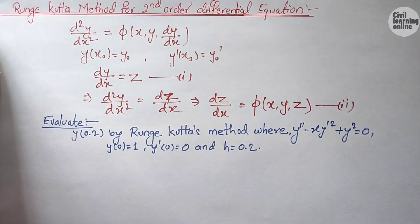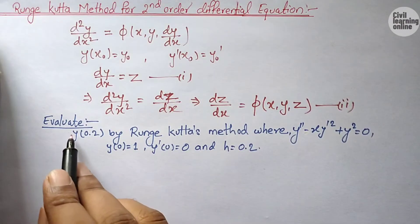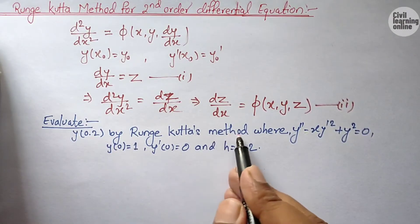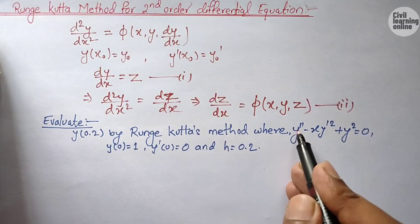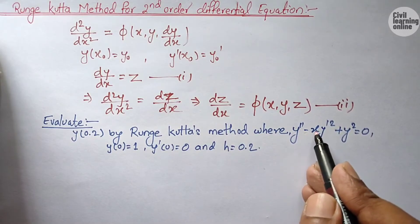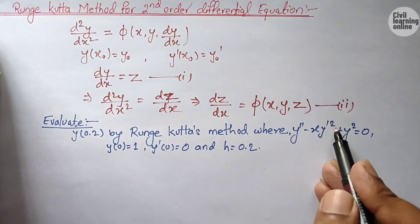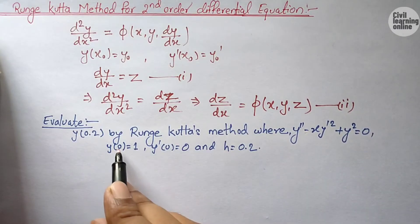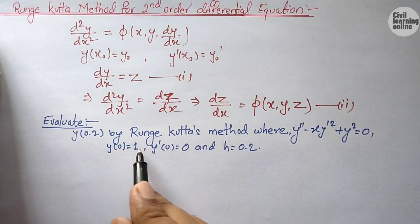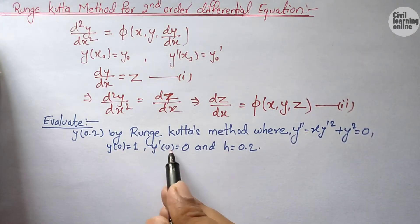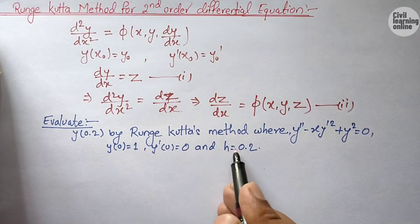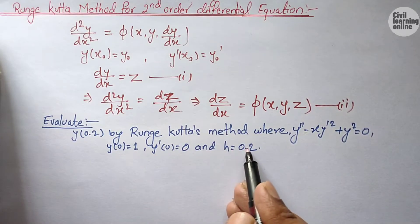The question says: evaluate y(0.2) by Runge-Kutta method, where y'' - x(y')² + y² = 0, with y(0) = 1, y'(0) = 0, and h = 0.2.